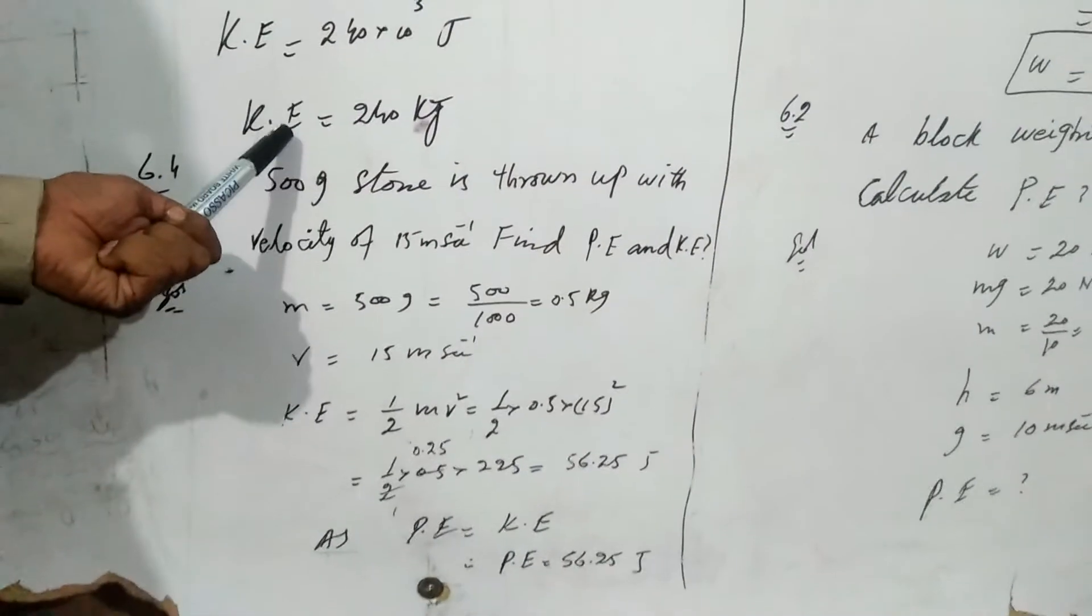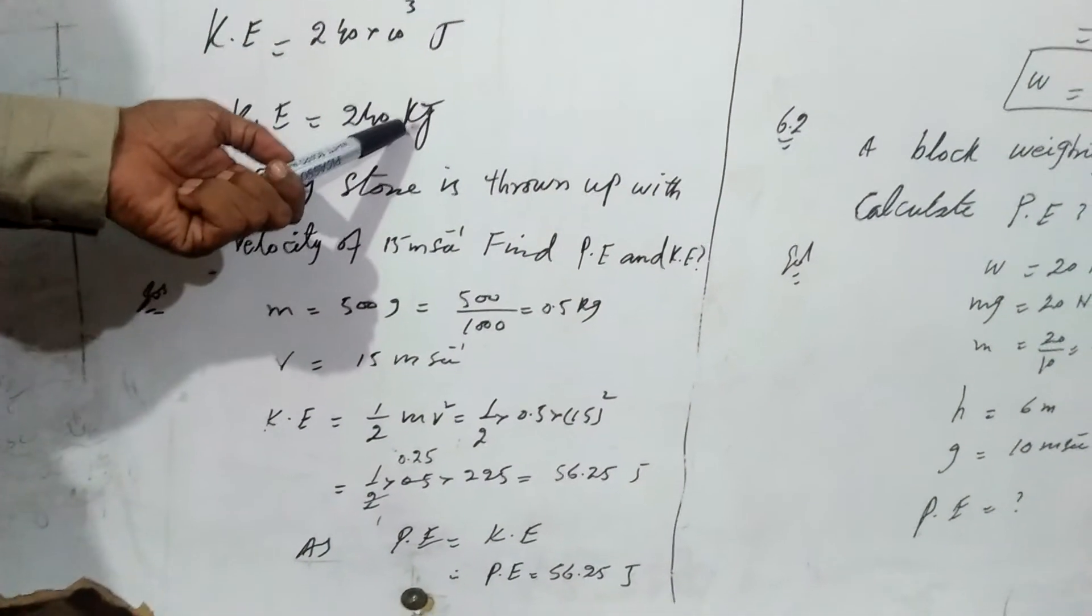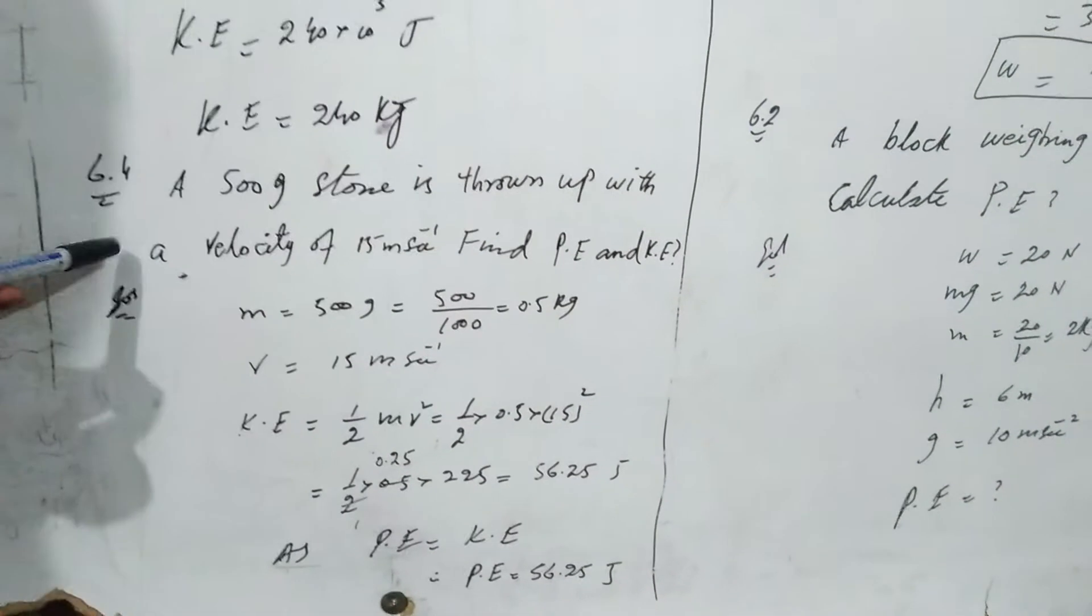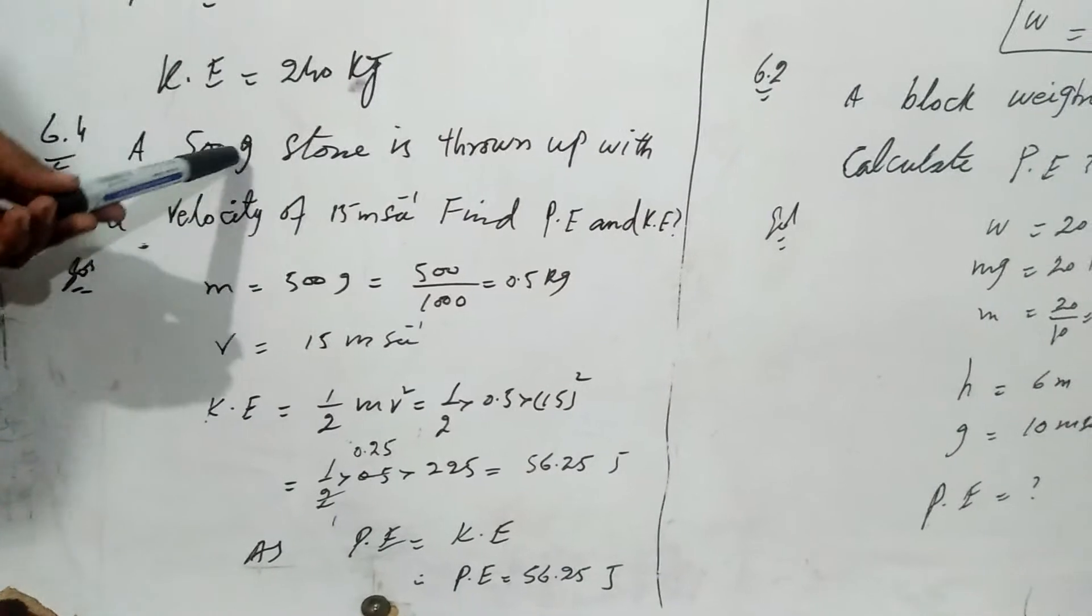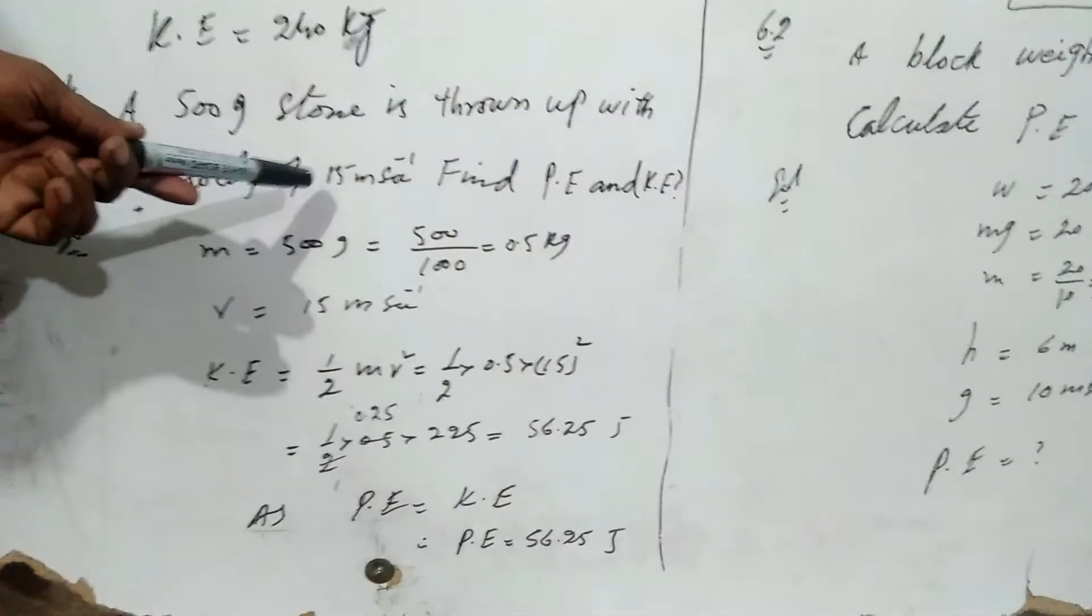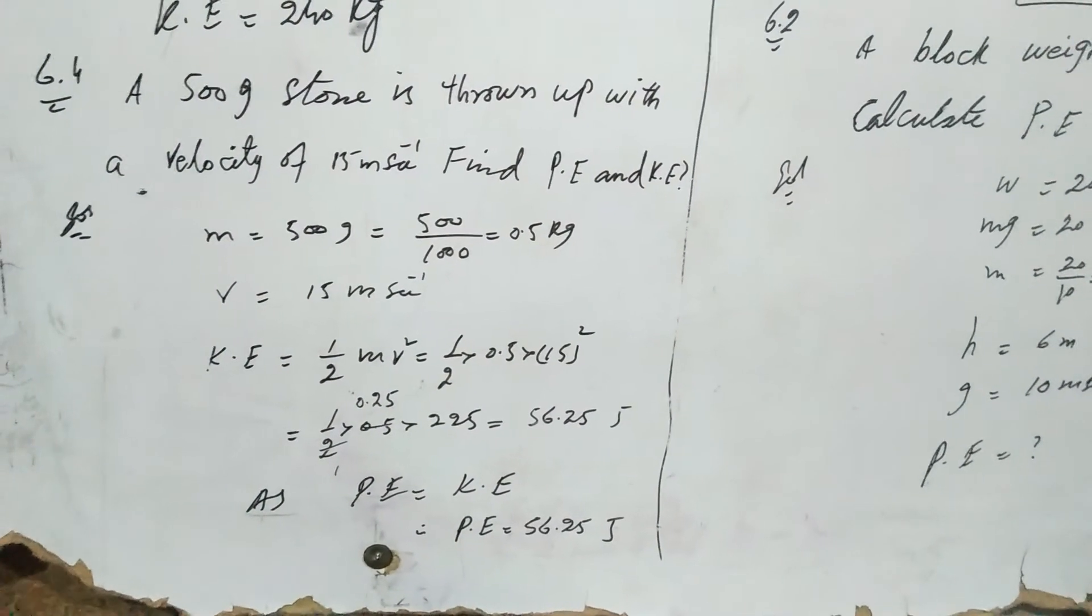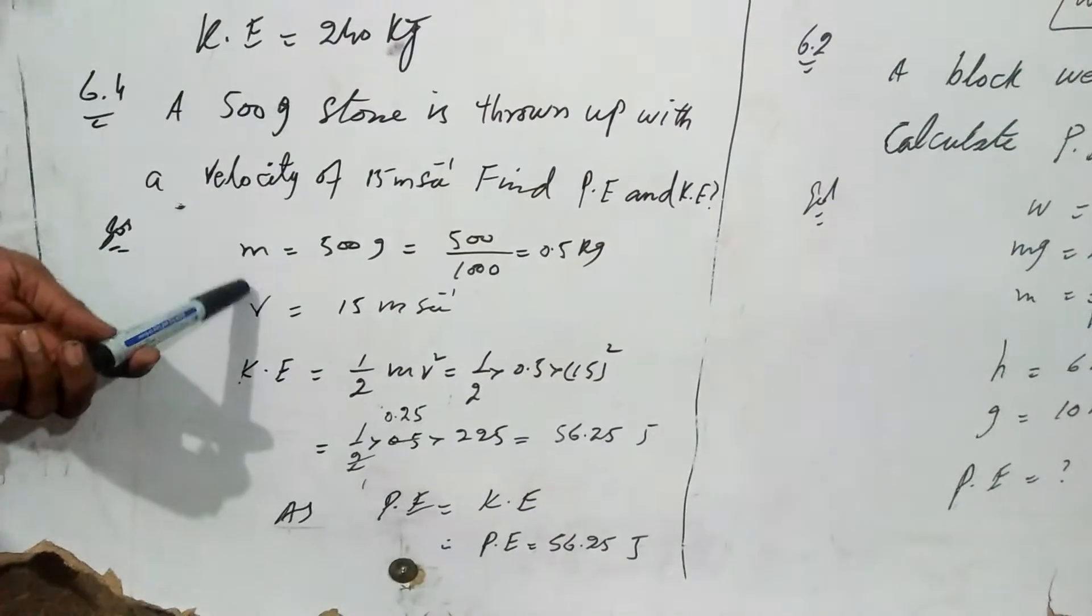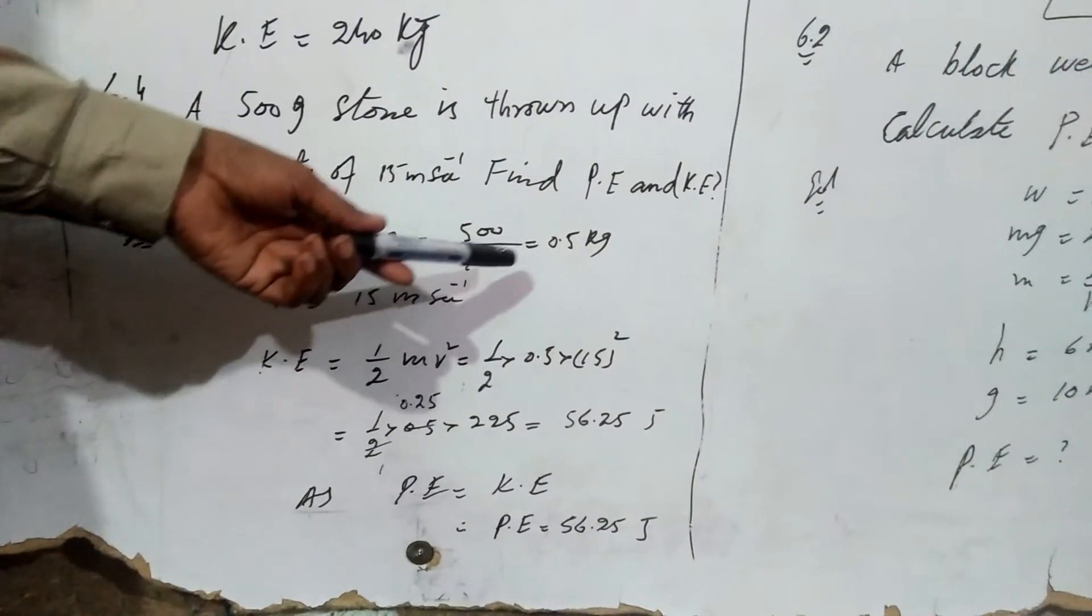So numerical number 6.4: A 500 gram stone is thrown up with velocity of 15 meters per second. Find potential energy and kinetic energy. First, we find the kinetic energy. M is 500 grams divided by 1,000, we get 0.5 kg. So velocity v equals 15 meters per second.